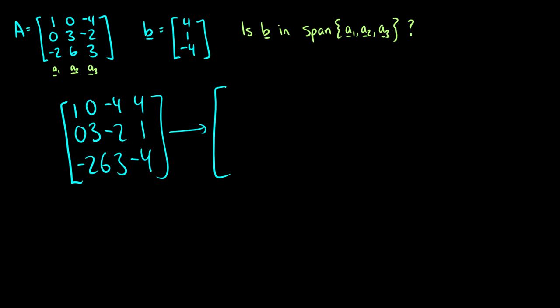Let's get rid of that negative 2 at the bottom. The first two rows stay the same. We take row three and add two of row one to it: negative two plus two is zero, six plus zero is six, three plus two times negative four is three minus eight which is negative five, and negative four plus eight is four.